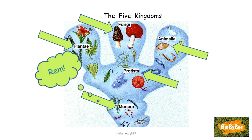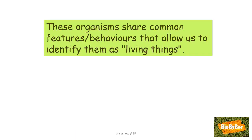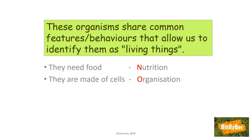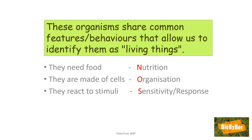When we look at this diversity of life, what do they all have in common? Remember, the objective here is to come up with a definition of life. Well, these organisms share common features, behaviours, and characteristics that allow us to identify them as living things. They all need food — which we shall call nutrition. They're all made of cells; cells are organised into tissues and organs and eventually into a body — that's called organisation. They react to stimuli, to things in their environment both externally and internally — this is called sensitivity. I prefer to call it sensitivity, and the reason will become clear in a moment.